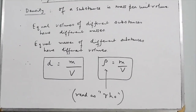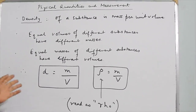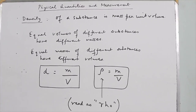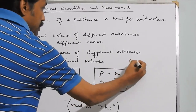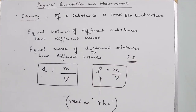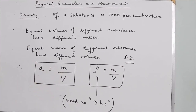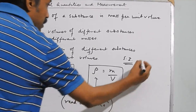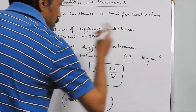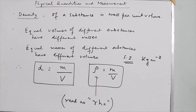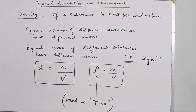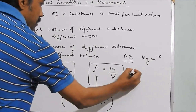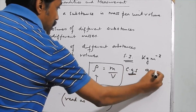Considering the unit of density, it is the unit of mass divided by the unit of volume. In SI units, the unit of density is kg per meter cube, since kg is the SI unit of mass and meter cube is the SI unit of volume. In CGS units, mass is in grams and volume in centimeter cube, so the CGS unit of density is gram per centimeter cube.